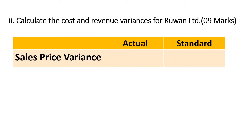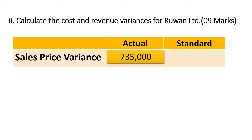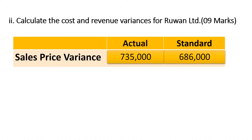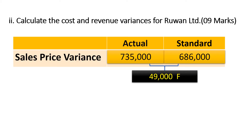Now let us calculate the revenue variances, which are the sales variances. Sales variance comprises sales price and sales volume. The sales price variance is the difference between actual price and standard price. Actually, they produced and sold 4,900 units at a sales price of 150, so actual sales value is 735,000. Adjusting for actual quantity, we use 4,900 × 140 (standard price). Comparing actual and standard price gives the sales price variance of 49,000 favorable.